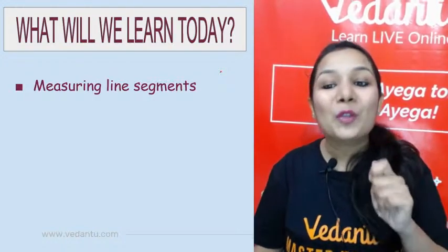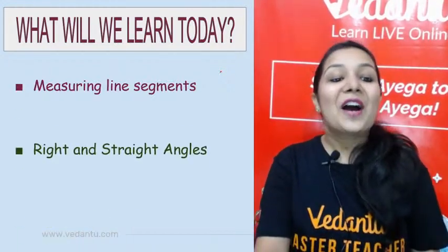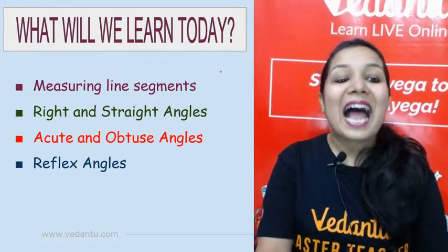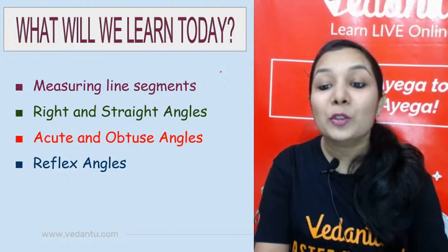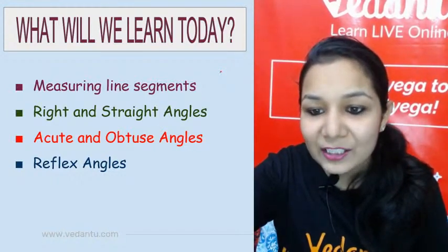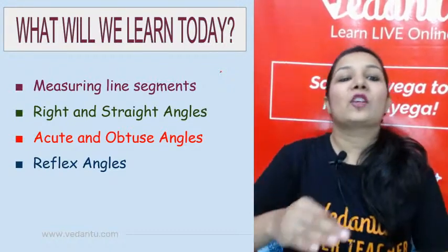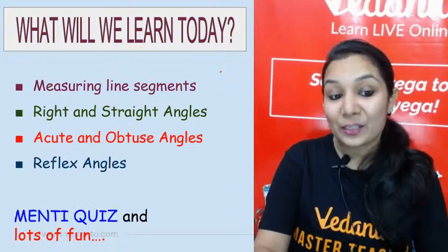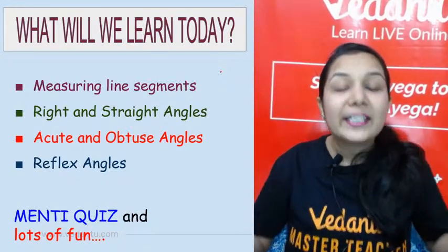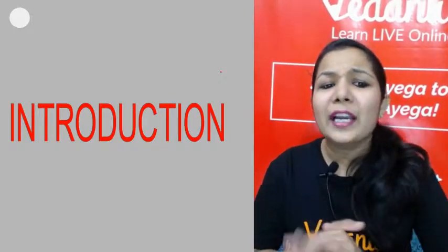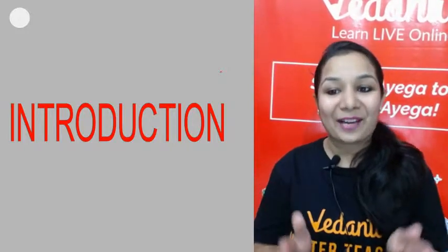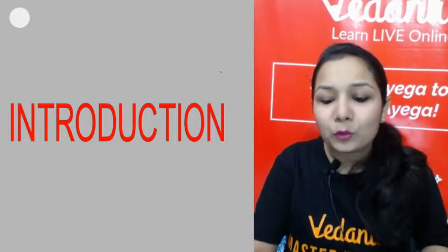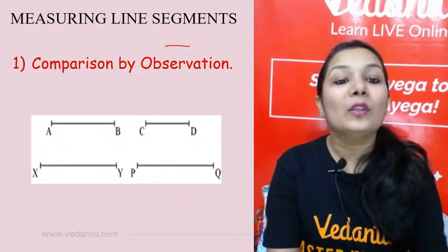Line segment is the one which has two end points. Line segment is a part of a line. So how can we measure a line segment? We can measure the line segment in three ways. The first is just by observation, comparing segments AB and XY just by looking at them to determine which is greater.